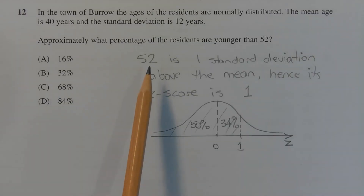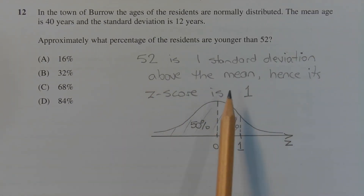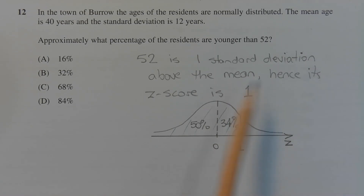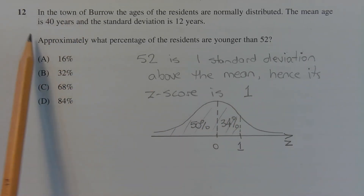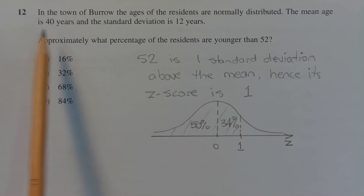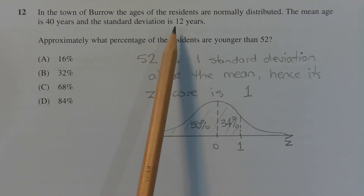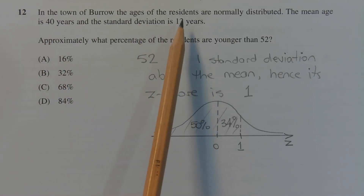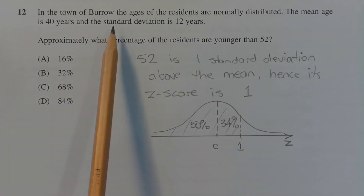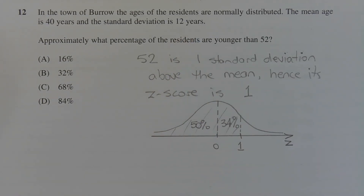The actual age of 52 is one standard deviation above the mean, hence its Z-score is 1. Recall that the mean is 40 years and the standard deviation is 12 years, so 40 plus 12, which is one standard deviation, is 52.